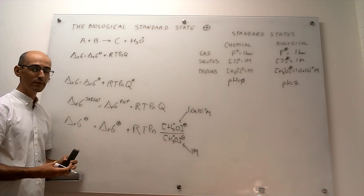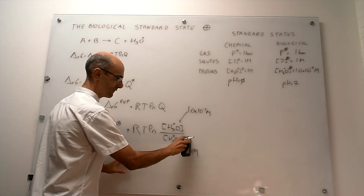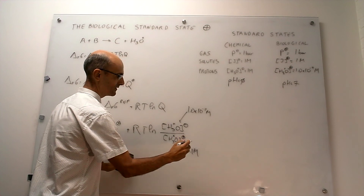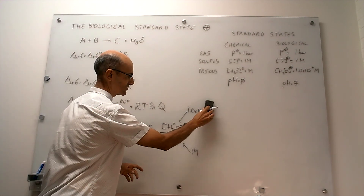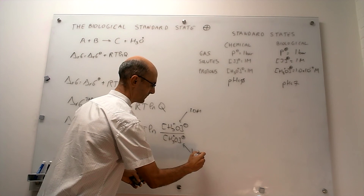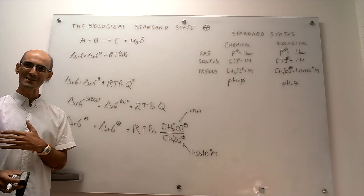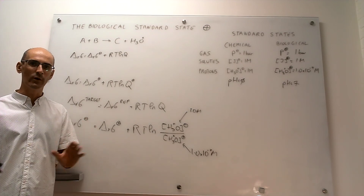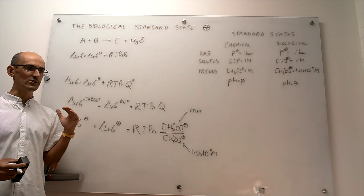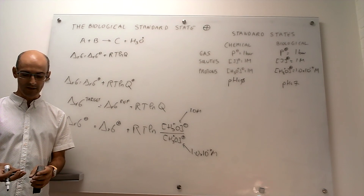If you follow the math, you write the reaction quotient, but in the end you flip these states: target is the chemical standard state, reference is the biological standard state. The concentrations change accordingly — now you have 1.0 molar in the numerator and 1.0 × 10⁻⁷ molar in the denominator. Notice how seamlessly you can go from any target to any reference, interpreting the expression as obtaining the reaction Gibbs energy at some target from the reaction Gibbs energy at a reference you have.